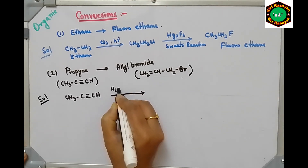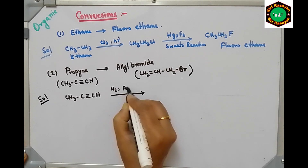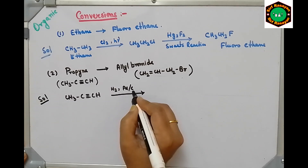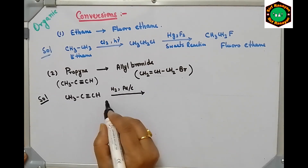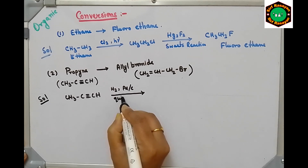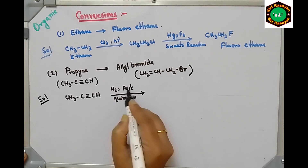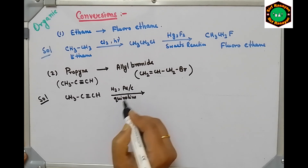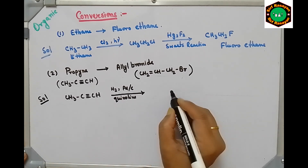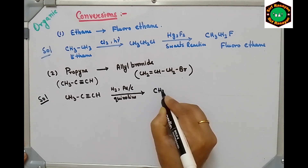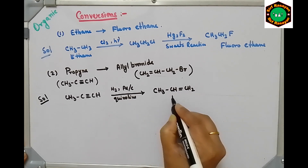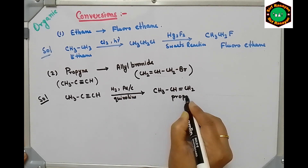Do hydrogenation in the presence of palladized charcoal (Pd/C) and quinoline, so that the catalyst is partially deactivated. This is Lindlar's catalyst. What you will get is CH3-CH=CH2, that is propene.